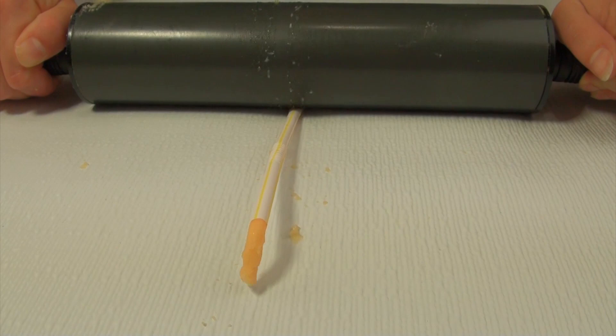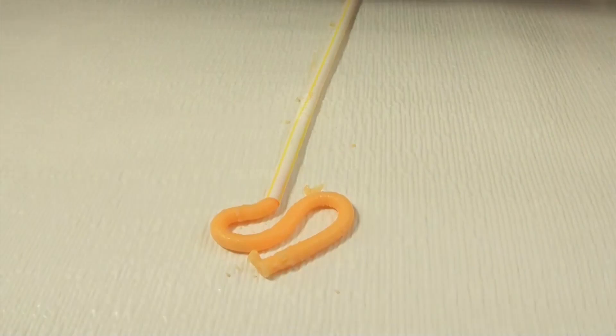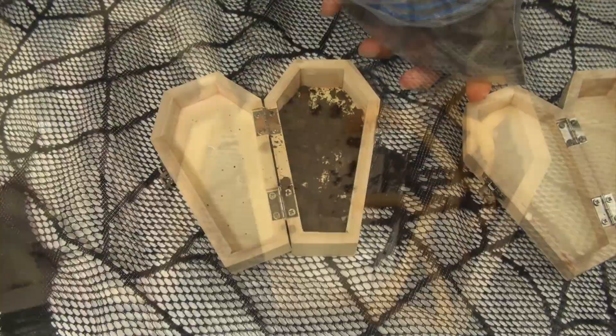Once you have all your worms out of your straws, you can put them into bowls or you can dress them up like I did. I just crushed some Oreo cookies that I had in the cupboard and placed them in these coffins that I got from the craft store and dressed them up like that. These would be a great addition to any Halloween party table.